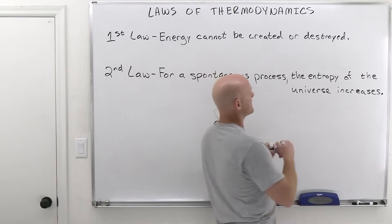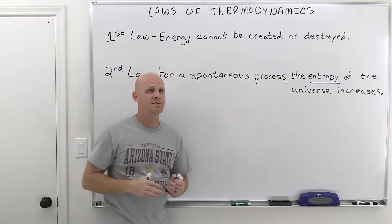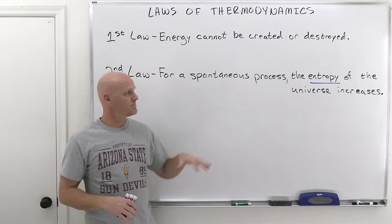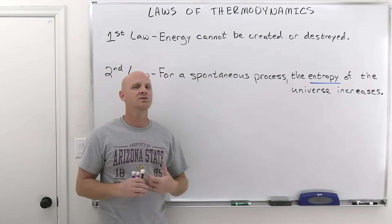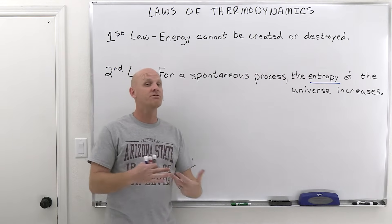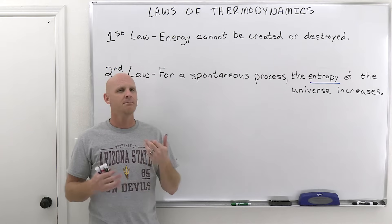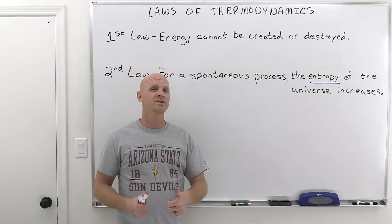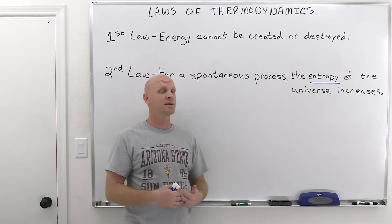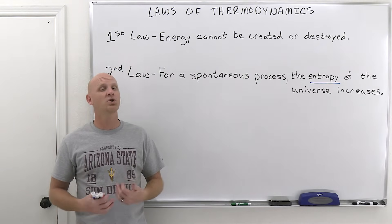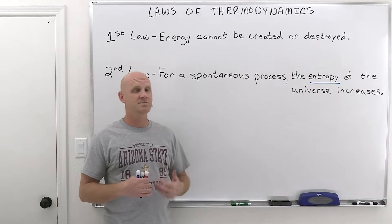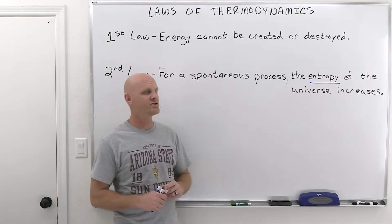We need to define entropy here — that's a big focal point of this chapter, and the entire next lesson is dedicated to it. For now, associate entropy with randomness or disorder. Entropy is not exactly equivalent to randomness or disorder, but they're correlated: if randomness or disorder in a system increases, entropy increases. If randomness or disorder decreases — a system becomes more ordered — entropy decreases as well.